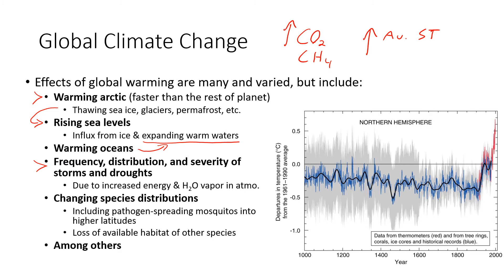Changing species distributions: each species is adapted for a certain range of temperature conditions, and if those change in an area, the species either has to move, migrate out, adapt, or it will go extinct. Some species will benefit, and some will not — some can go extinct. One of the more worrisome changes is tropical mosquitoes that can carry malaria, dengue fever, yellow fever, and Lassa fever expanding into higher latitudes both north and south. There are other effects, and we will discuss them later in the semester.